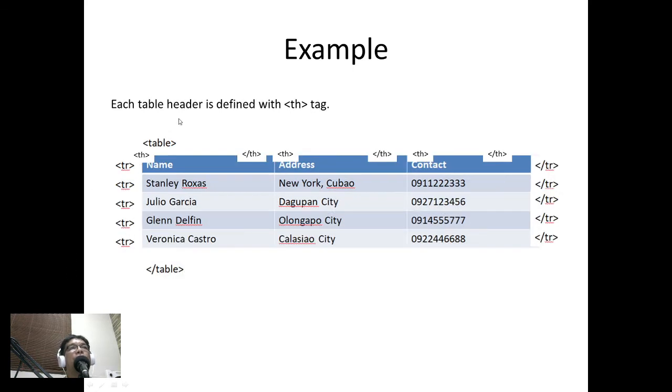Then each table header is defined with a TH tag. So this is our header, these are our headers. So here table, then we have TR, after TR: TH name TH, because name is actually a table header. Then TH address TH, then TH contact TH, and then slash TR. So again, we use a TH to define headers.